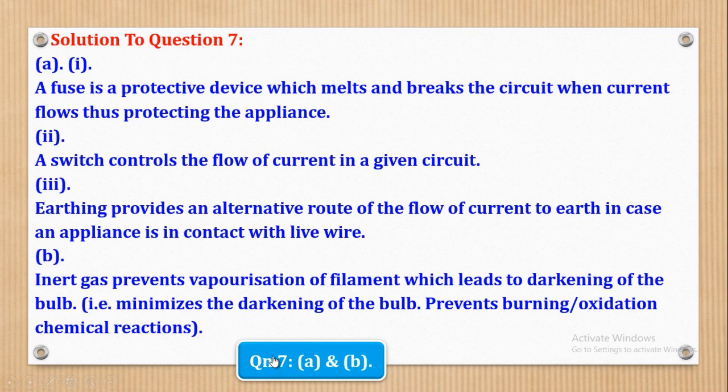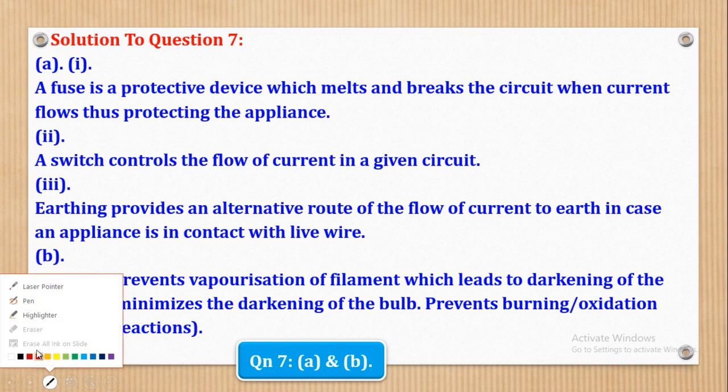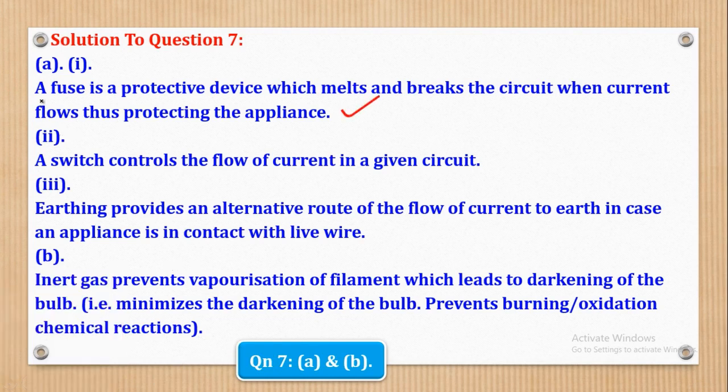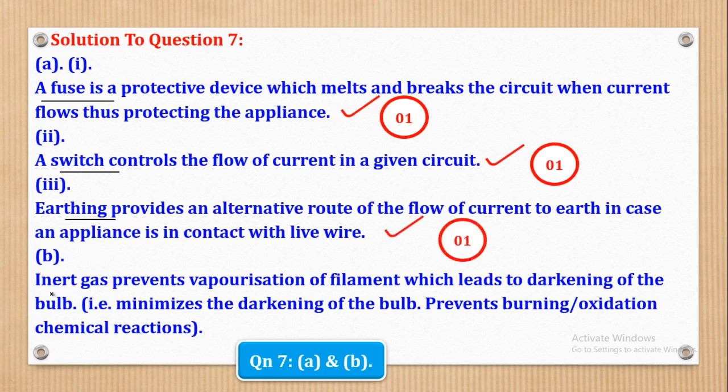It minimizes the darkening of the bulb or prevents burning stroke oxidation chemical reactions. So basically, that's what they wanted in Part A and Part B. Now we shall go to marking ourselves. Function of a fuse, that is one mark. Function of a switch, that is also one mark. Function of the earth connection, that is also one mark. Then the reason for function of the inert gas in the space of a filament, that is also one mark.